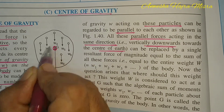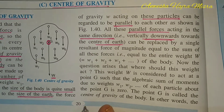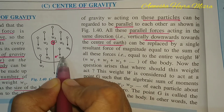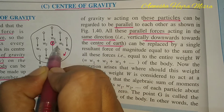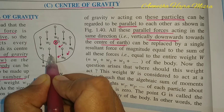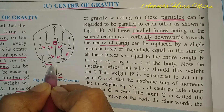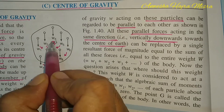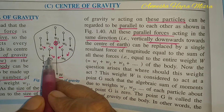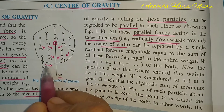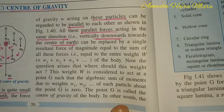I can replace all these weights by a single weight W acting at a point, and that is called the center of gravity of that body. Now if you take the moment about the center of gravity of all these forces, some weights will produce a clockwise moment and others an anti-clockwise moment, while w4 acting through the center of gravity will give no moment. If you add all the moments about the CG, it will come out to be zero.